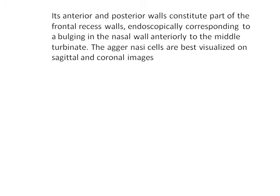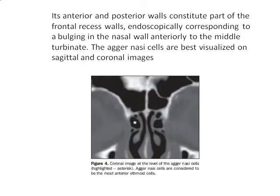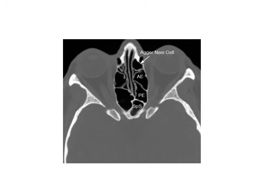The anterior and posterior walls constitute part of the frontal recess walls, endoscopically corresponding to a bulge in the nasal wall anterior to the middle turbinate. The agar nasi cells are best visualized on sagittal and coronal images. This is the axial view of the agar nasi cell.